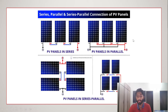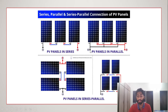For a parallel PV connection, all the negative terminals of the solar modules are connected together in a single wire and fed into the negative terminal of the inverter. Similarly, all positive terminals are joined together and connected to the positive terminal of the inverter. That's PV panels in parallel.